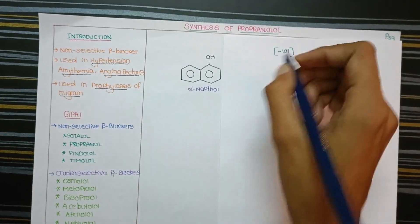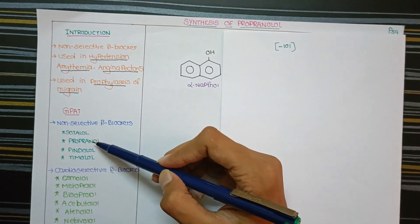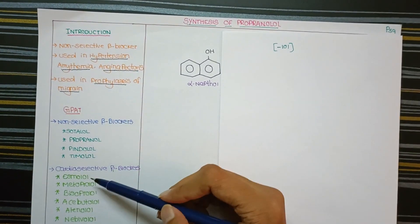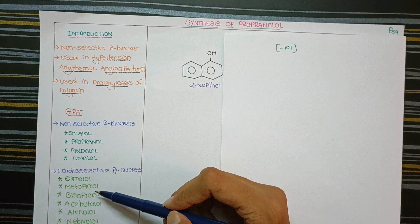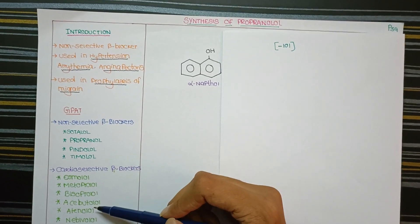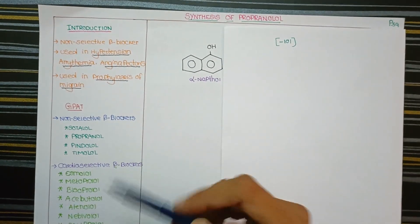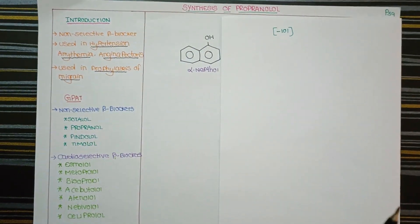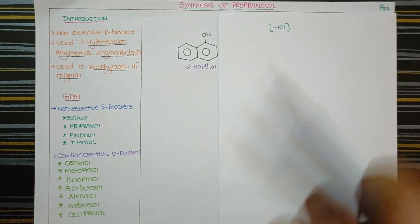Here is a list of beta blockers: sotalol, propranolol, pindolol, timolol, esmolol, metoprolol, bisoprolol, atenolol, nebivolol, and celiprolol. All of these drugs share the '-lol' suffix, which identifies them as beta blockers.